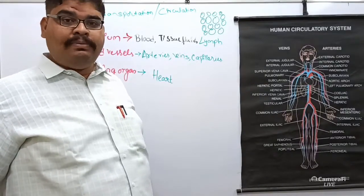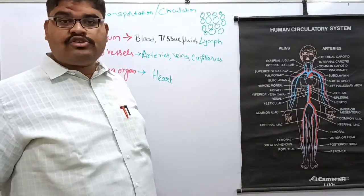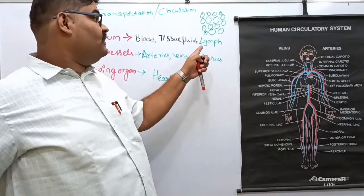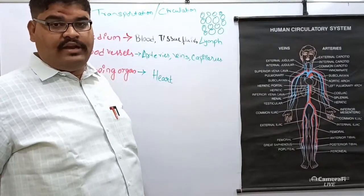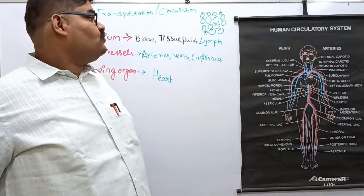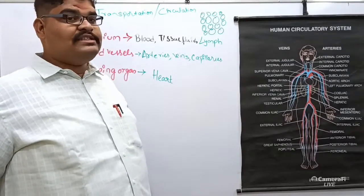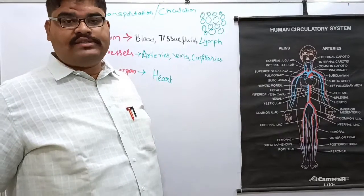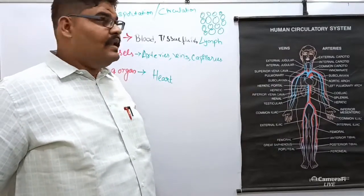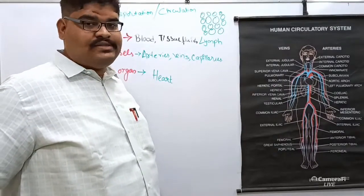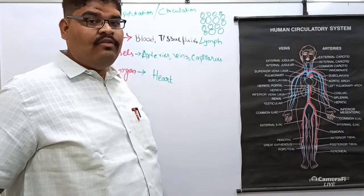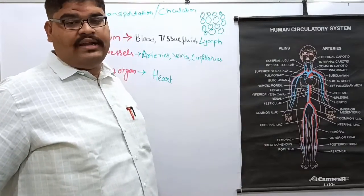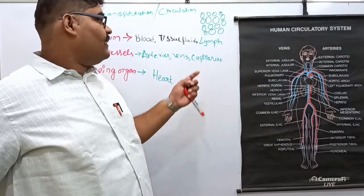Examples of lymph organs include the spleen — called the graveyard of RBCs — where lymph is available, and the tonsils in the throat region, which are also lymph organs where lymph is present. Lymph is a straw-colored fluid.